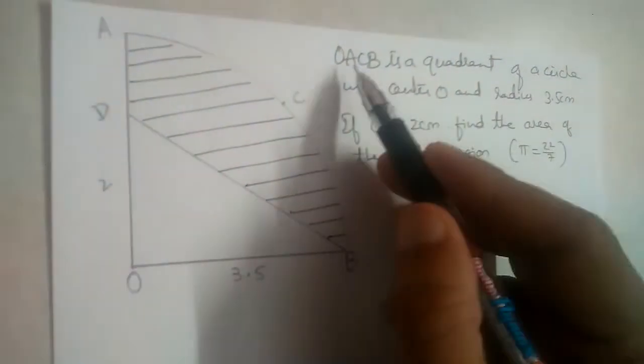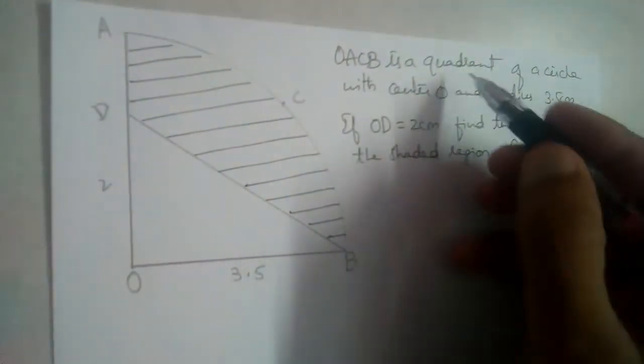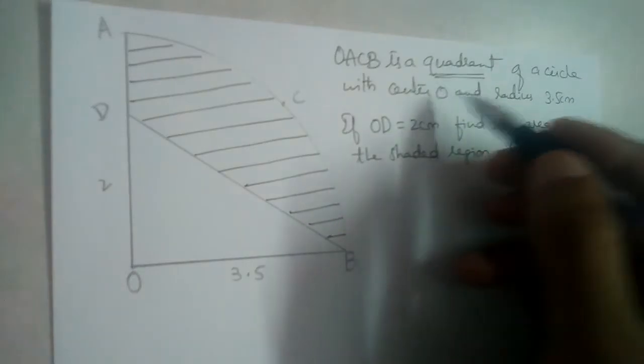Let us solve this problem. OACB is a quadrant. Quadrant means quarter circle.